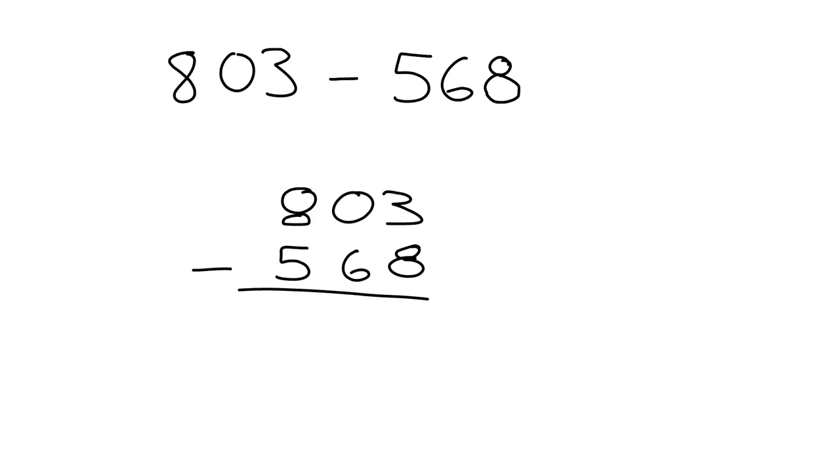So we start from the right and we say 3 minus 8. Well, 3 is smaller than 8, so we don't want to do that. So we go over here to try and get one of the tens to bring over. But there aren't any tens, so we can't bring over from here. So we have to go all the way to the hundreds column.